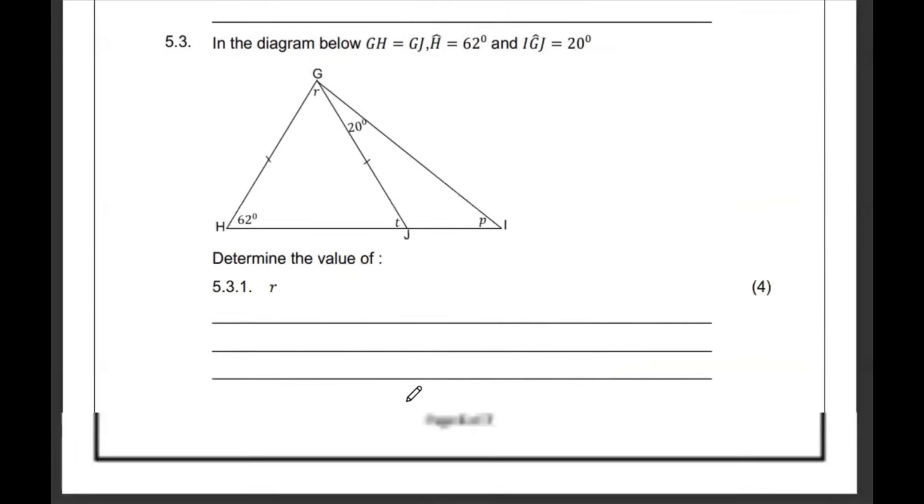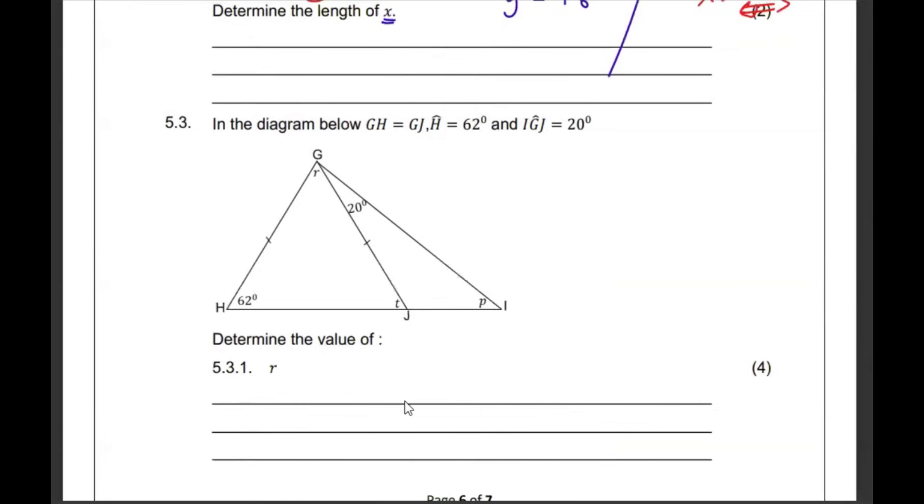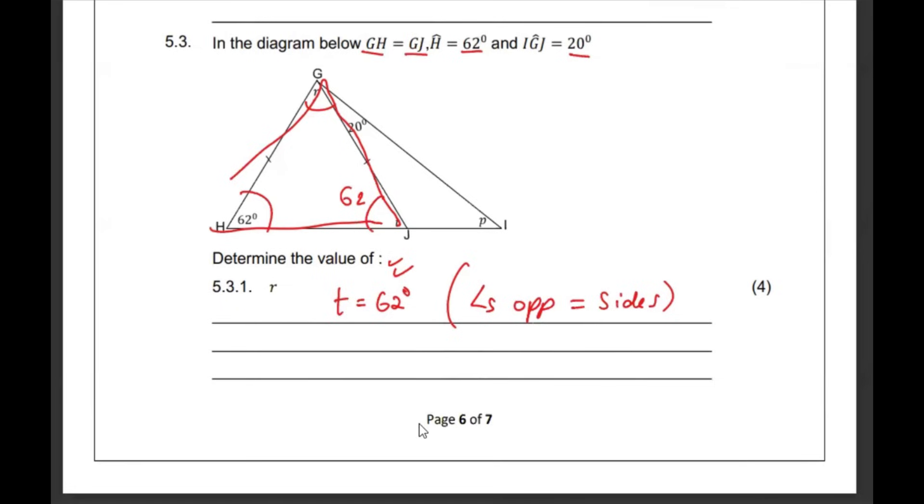Then, 5.3. They're telling us that in the diagram, this side is the same as that. That angle is 62. IGJ is 20. They want us to get the size of R, this angle here. Start by telling us that T is also going to be 62 because this is an isosceles triangle. And, if that triangle is isosceles, this angle must also be the same as that. Angles that are opposite equal sides. So, if that's 62, then we can add up angles in the triangle. So, we're going to say that R plus 62 plus 62 must give us 180 interior angles of a triangle. Then R is going to be 180 minus 124. Then R becomes 56.